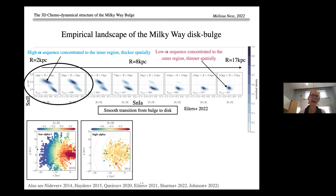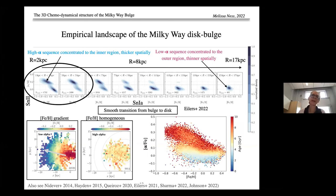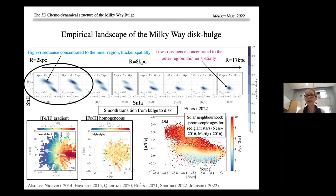Looking at maps in the XY plane, with the sun at minus 8 kiloparsec and the bulge at (0,0): the low-alpha disk has a beautiful metallicity gradient — most metal-rich in the inner region going to more metal-poor in the outer region — whereas the high-alpha disk is chemically homogeneous and concentrated to the inner region. In the solar neighborhood, the high-alpha disk is old and the low-alpha disk is young. With spectroscopic ages, we're moving from getting ages in the solar neighborhood to getting ages across the entire galaxy from stellar spectra of red giant stars.